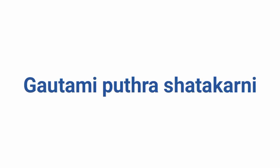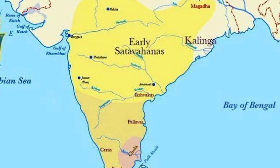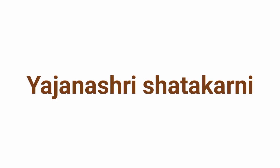A prominent king of this dynasty was Gotami Putra Shatakarni. He did away with the bitter enemies of this kingdom, the Shakas, beyond the border of India. The Shilavahana Shakha era is supposed to have been inaugurated by him. He expanded his kingdom to include not only Konkan, Berar, Saurashtra, and Malwa, but also many new areas. He held the title 'Tri-Samudra-Toya-Pita-Vahana.'